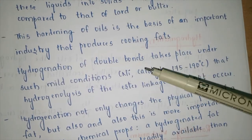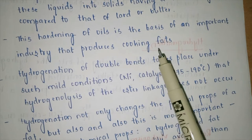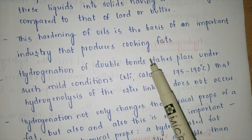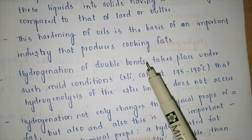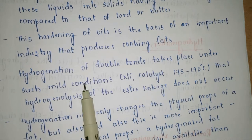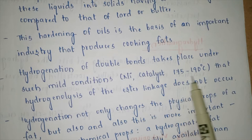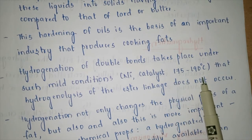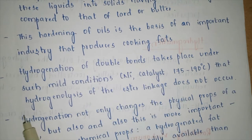The hardening of oils is the basis of an important industry producing cooking fats — converting cheap oils to the consistency of butter. Dalda is a common example; though not ideal for health, it can be stored for a longer period. Hydrogenation of double bonds takes place under mild conditions with nickel as a catalyst at 175–190°C. Importantly, hydrogenolysis of the ester linkage does not occur under these conditions — only hydrogenation.